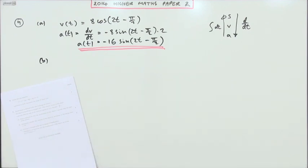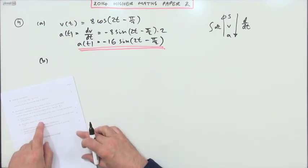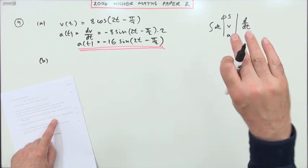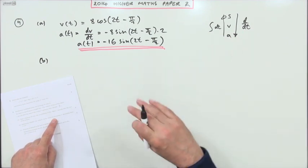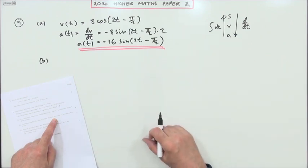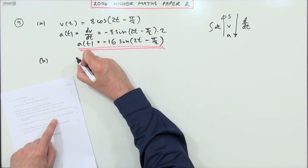Part b. Determine whether the velocity of the object is increasing or decreasing. Is it accelerating or decelerating? It's like a gradient. Is the gradient positive going up, or is the gradient negative going down?